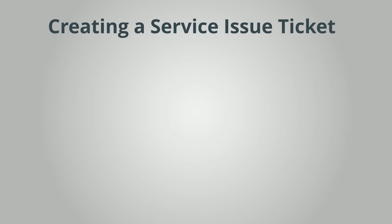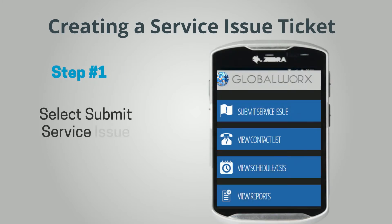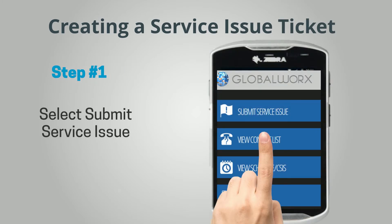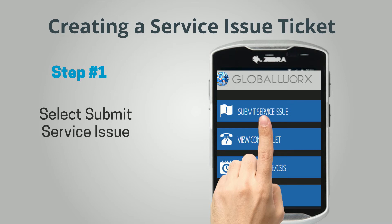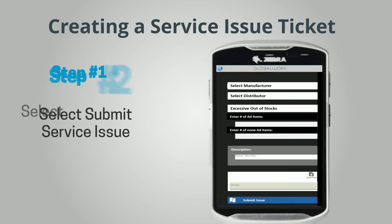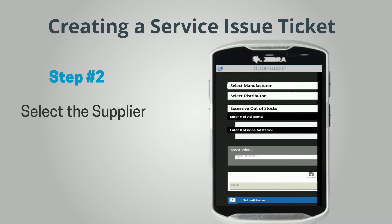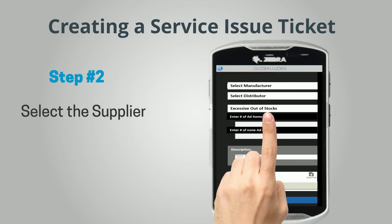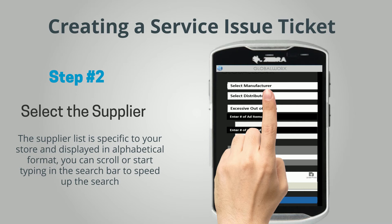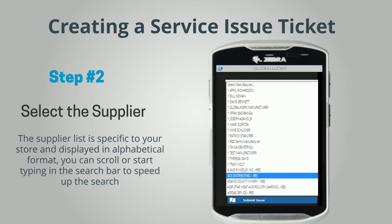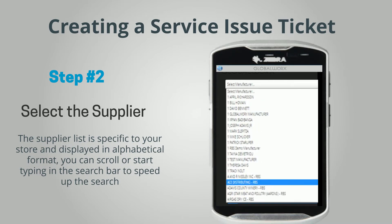Creating a service issue ticket. Step 1: Select Submit Service Issue from the main menu. Step 2: Select the supplier. The supplier list is specific to your store and displayed in alphabetical format. You can scroll or start typing in the search bar to speed up the search.